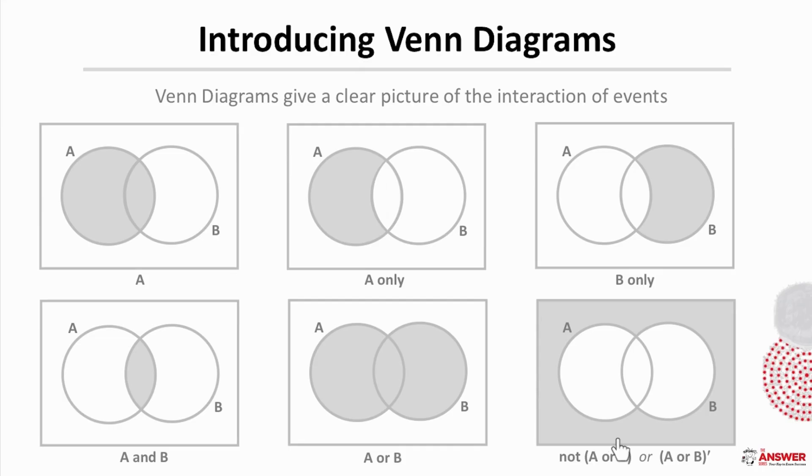And then this final one is everything in the sample space other than A or B. We will talk more about the notation during the video.